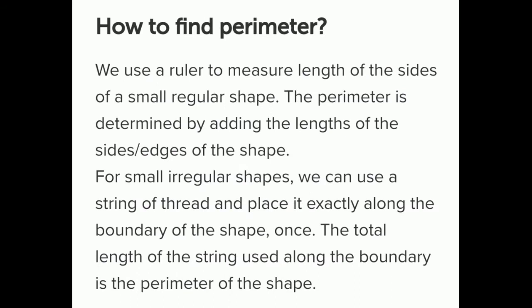How to find perimeter? We use a ruler to measure the length of the sides of a small regular shape. The perimeter is determined by adding the lengths of the sides or edges of the shape. For small irregular shapes, we can use a string of thread and place it exactly along the boundary of the shape. The total length of the string used along the boundary is the perimeter of the shape.